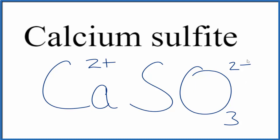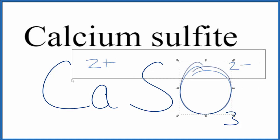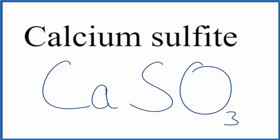2+ and 2- add up to 0, giving us a net charge of 0. So the formula for calcium sulfite is CaSO3. This is Dr. B, and thanks for watching.